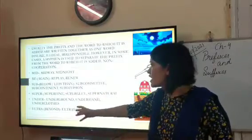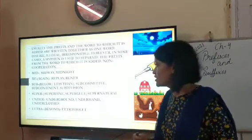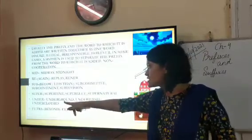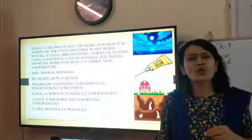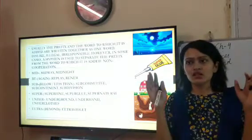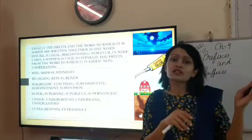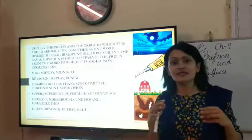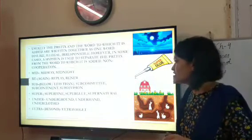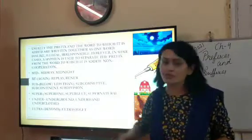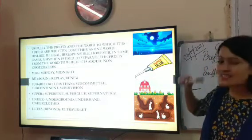The prefix 'super' forms words like 'superfine', 'superman', 'superglue', and 'supernatural'. 'Under' forms words like 'underground' and 'underclothes'. 'Ultra' means beyond — so 'ultraviolet' means beyond violet. In the color spectrum, violet is a wave of light, and beyond violet is not visible to our eyes. Ultraviolet rays are part of light but are not visible. This is an example of underground with 'under', and midnight as well.